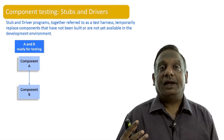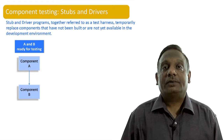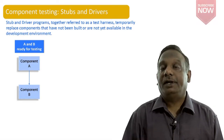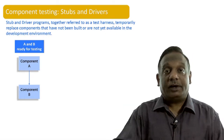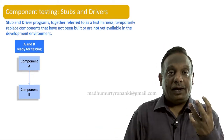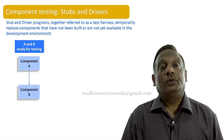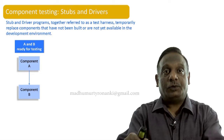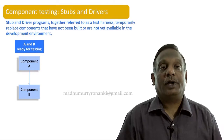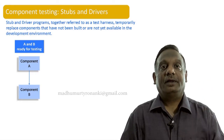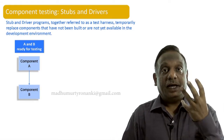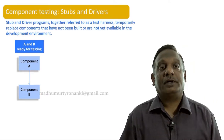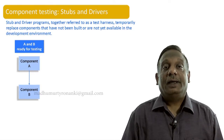Now let us look at the concept of stubs and drivers. Stub and driver programs together are referred to as a test harness, and they temporarily replace components that have not been built or are not yet available in the development environment. When testing components in isolation, a component often needs data from other components. Looking at this diagram, if both component A and component B are ready, you can do the testing easily.